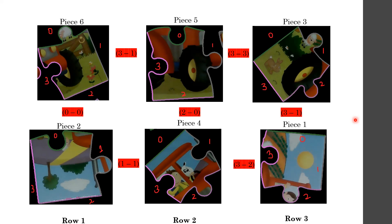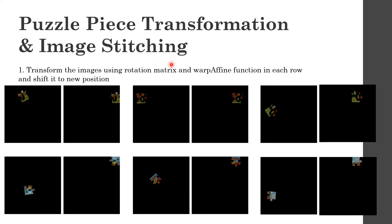Once we have this connection information, we transform the images using rotation matrices and the warpAffine function, shifting each piece to its new position. Since we know the first piece of the first row goes to the corner, we form a transformation matrix that maps those edges to the corner of the output image. We repeat these steps for all pieces to get each transformation matrix and stitch them into the final output image.